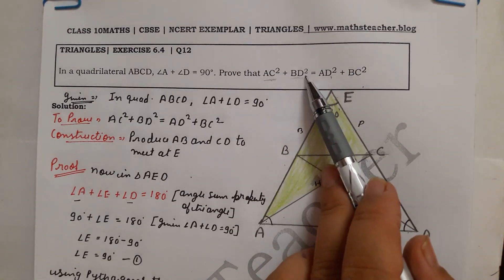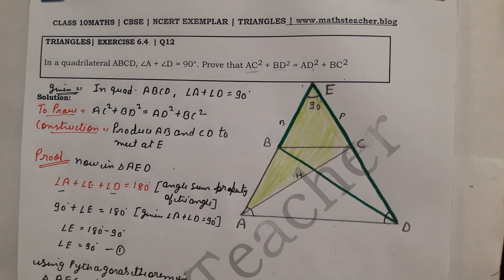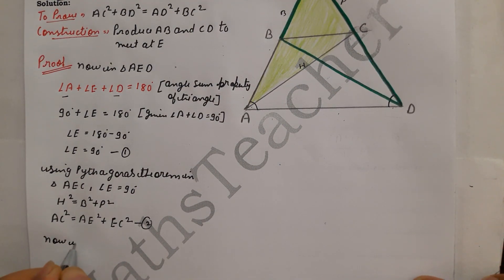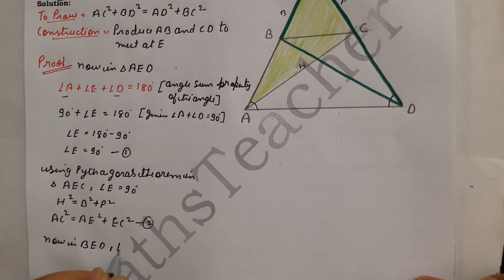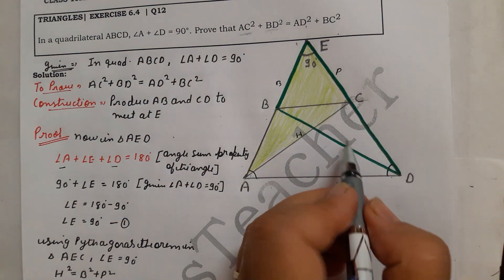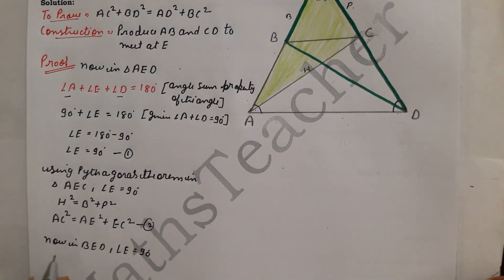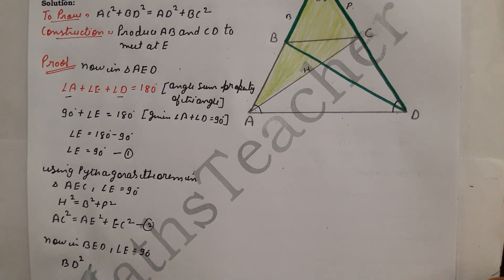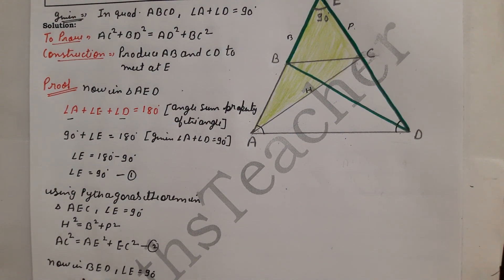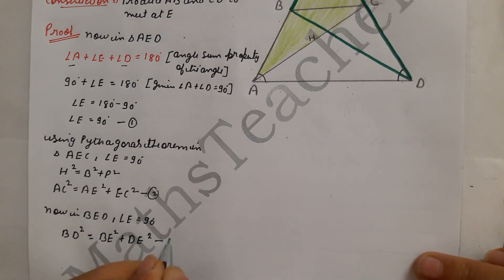Next, for BD², I join B to D. In triangle BED, angle E is 90 degrees. Applying Pythagoras theorem: BD² equals BE² plus DE². This is equation number 3.